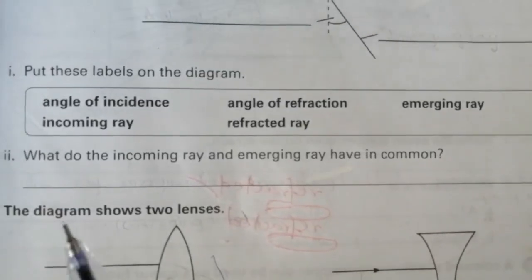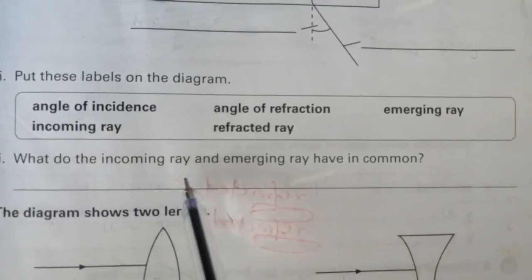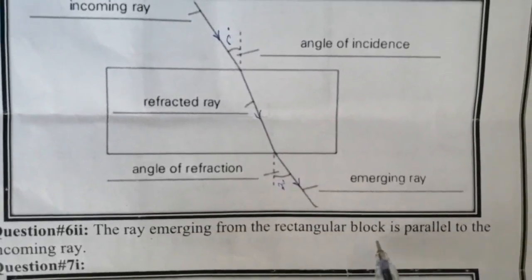Question number 6, part 2: where do the incoming ray and emerging ray have in common? The answer is: the ray emerging from the rectangular block is parallel to the incoming ray.